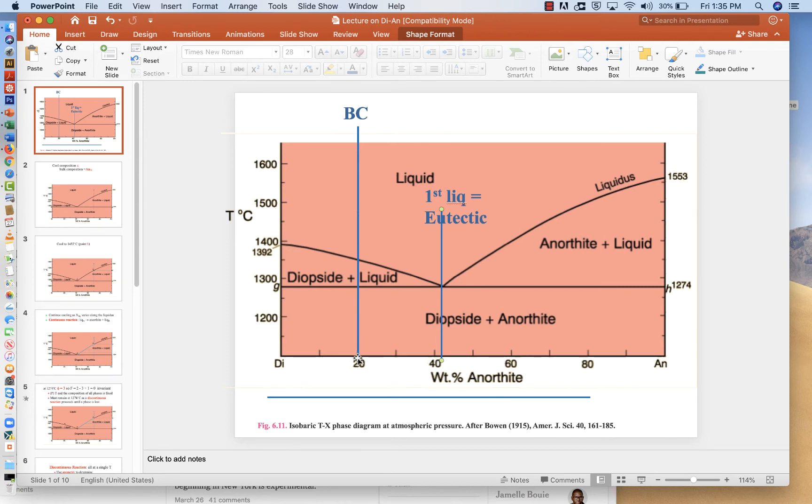If we start with something that's 20% anorthite and we melt it, we should end up with something that is 20% anorthite when we're done, except the anorthite is now liquid instead of crystalline. And that means that we have to end up over here on the diopside plus liquid side. The only way we could do that is if anorthite melts out first. So the fact that the bulk composition is hitting the diopside plus liquid field means that we're going to sit at the eutectic until all of the anorthite is gone.